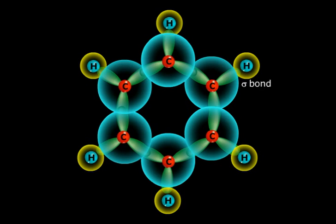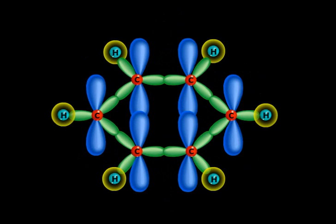Now only the p orbitals are left. See carefully. Can you see? These p orbitals are parallel to each other and also they are perpendicular to the plane of the C ring.